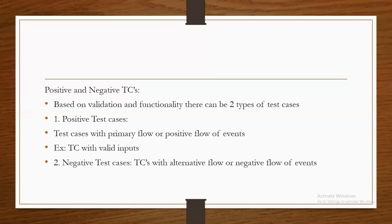Similarly, negative test cases are test cases with the alternative flow or negative flow of events. Here the expectation is some error message, or an unsuccessful transaction. When you derive test cases in such a way, those are going to be called negative test cases. Example: test case with invalid inputs. They may ask in an interview — what is positive testing, negative testing, or what are positive test cases and negative test cases? Test with primary or positive flow of events is positive testing. Test with alternative or negative flow of events comes under negative testing.